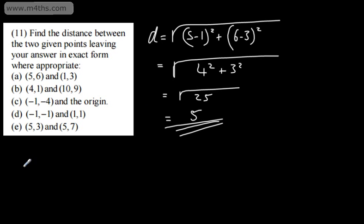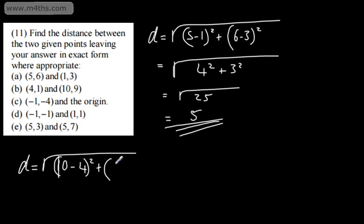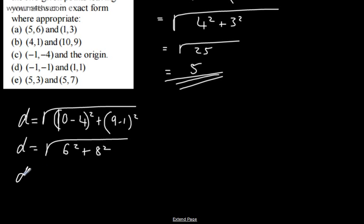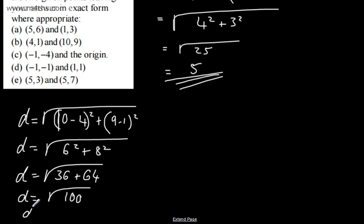Looking at the second pair, the distance is going to be the square root of 10 minus 4, all squared, plus 9 minus 1, all squared. So that's 6 squared plus 8 squared — the square root of 36 plus 64 — which is the square root of 100, giving a distance of 10. We could have done 4 minus 10 and 1 minus 9, and those would have given us the same answers.